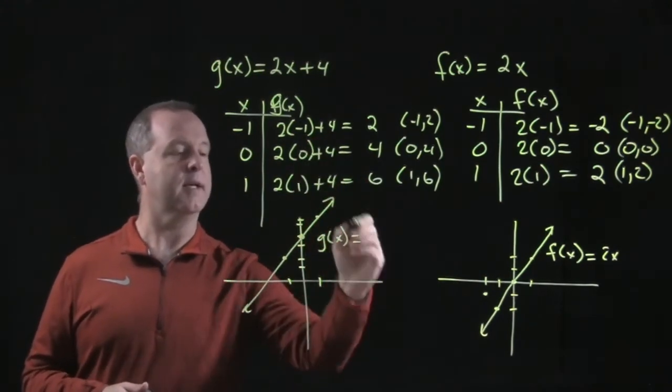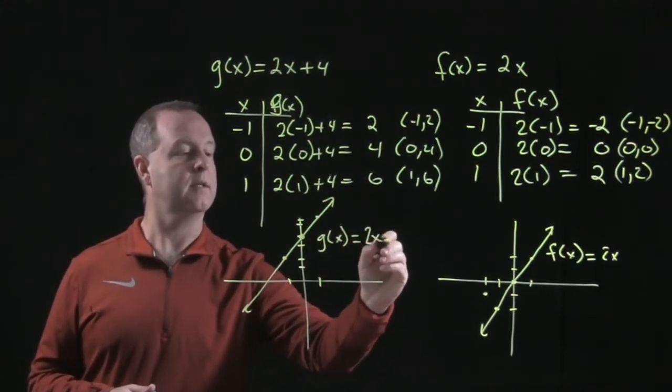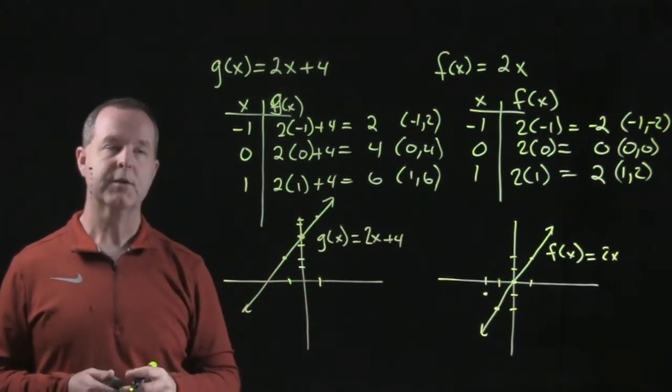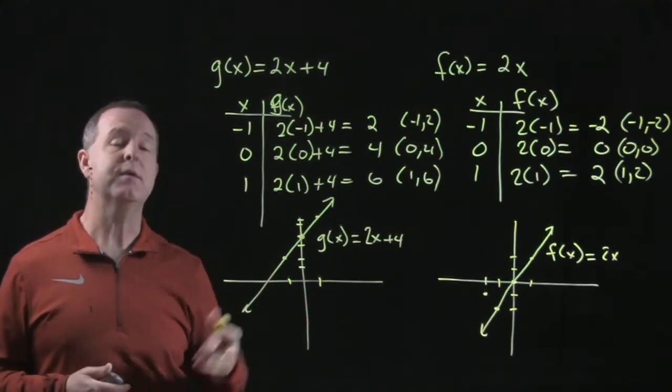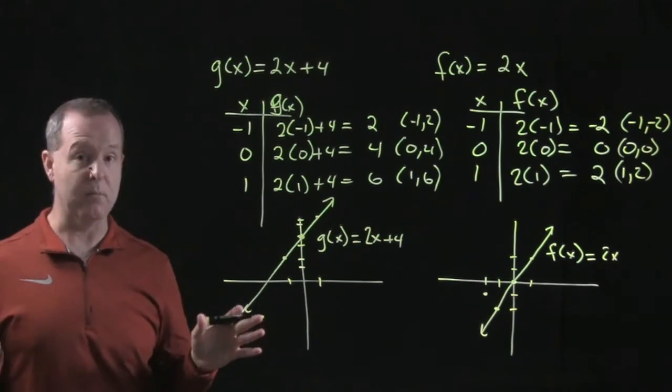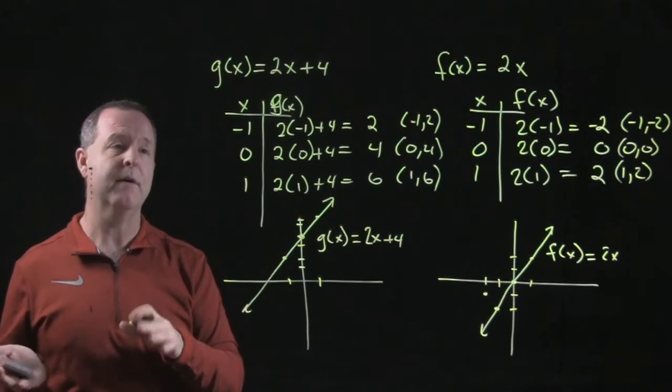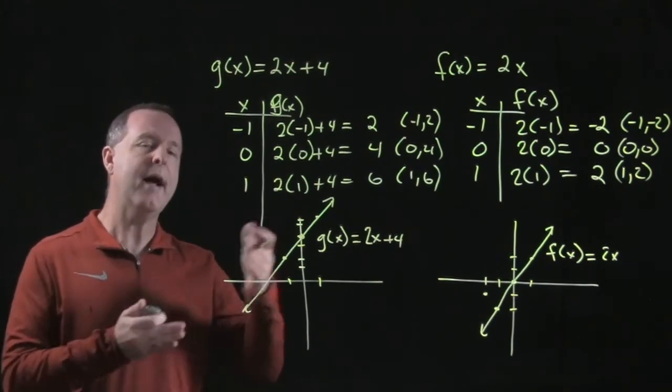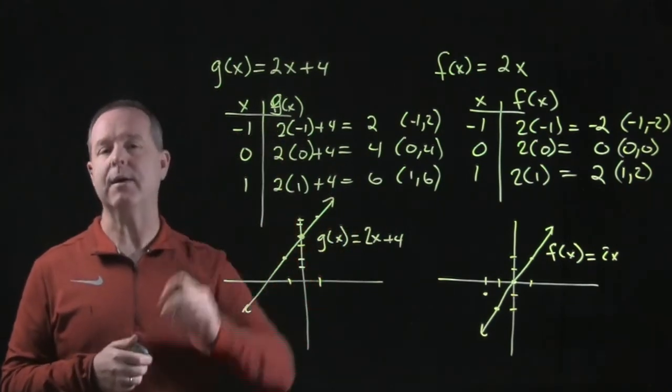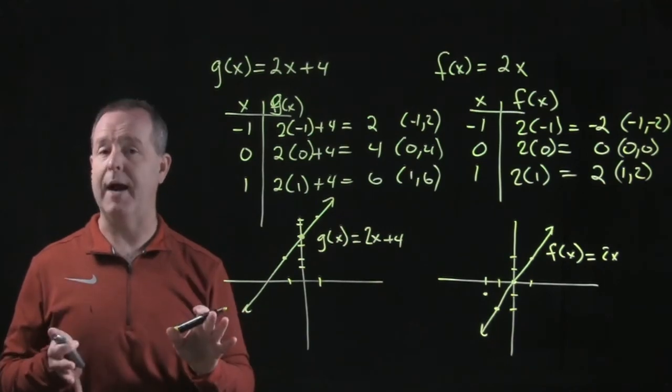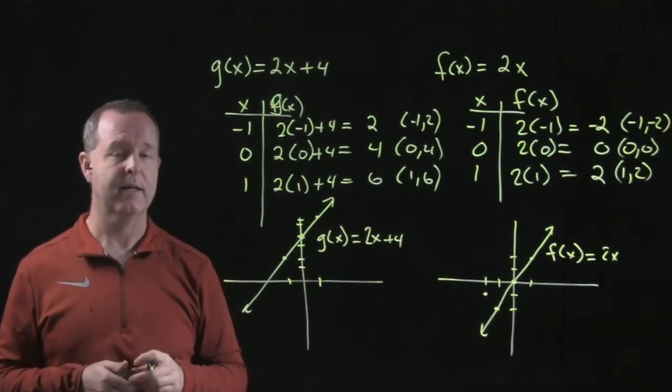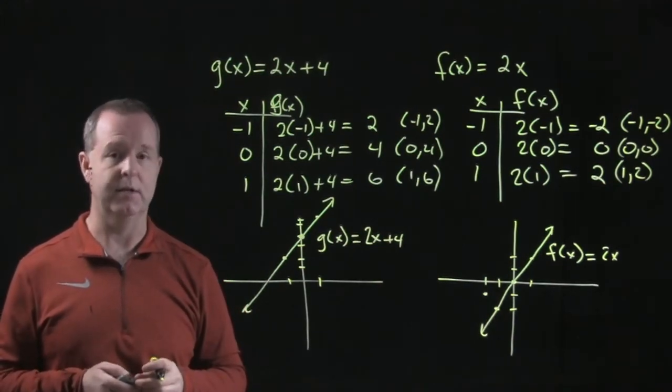And that one equaled, again, what we had before, 2x plus 4. So that's how we can graph using function notation. And I know most of you guys are looking at, we haven't really changed or done anything different than how we've learned to graph before when we had y equals 2x or y equals 2x plus 4. And that's correct. It's the same process, but we're going to be using function notation to do so.